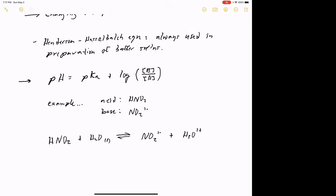The nitrite ion is the conjugate base of the weak acid — just the deprotonated version of the acid — so we have a conjugate acid-base pair. That's what's required to make a buffer: some mixture of a conjugate acid-base pair in solution. The reason we chose this pair is because the pKa of HNO2 is very close to the target pH we wanted. The pKa — the negative log of the Ka of HNO2 — turns out to be 3.39.